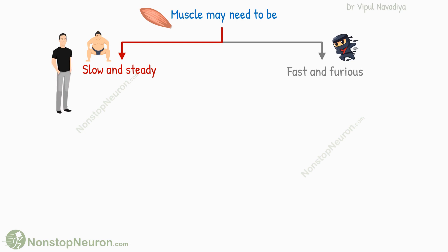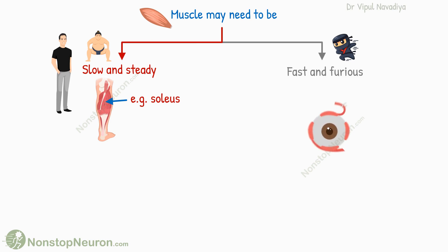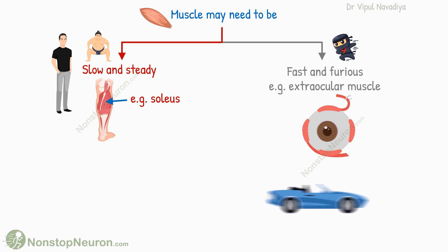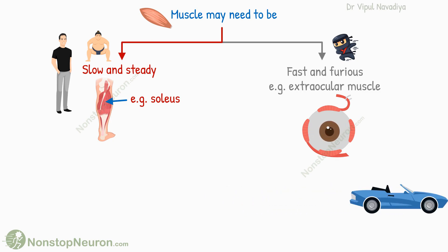For example, the muscles that maintain body posture, such as the soleus muscle, need to maintain tension for a long period, and therefore must be resistant to fatigue. On the other hand, some muscles, like extraocular muscles, need to contract rapidly to keep the eye on rapidly moving objects. Thus, we need muscles with different abilities.